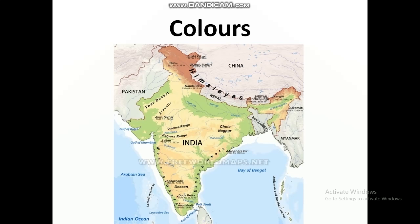Next is colors. The colors on a map indicate different features. For example, blue color indicates water — you can see on the southern side of this map, the Bay of Bengal, Arabian Sea, and Indian Ocean are shown in blue. Brown color indicates hills; from the north to the eastern part of India, brown color is shown, meaning that part is covered with mountains. Green color indicates plains — areas covered with green color are plains.